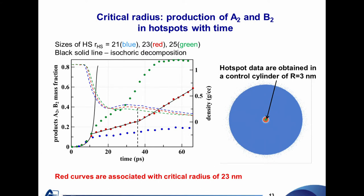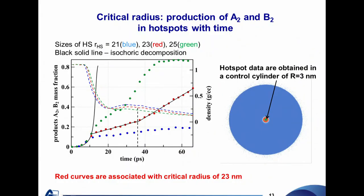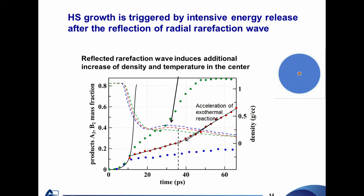We found the critical radius of the hot spot to be about 23 nanometers under these conditions. Hot spots with radius 21 nm died, while larger ones expanded. The density jump due to reflection of the rarefaction wave from the center causes densification that changes the slope of product formation, accelerating it, and the hot spot starts to grow.